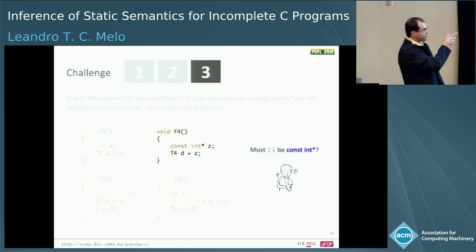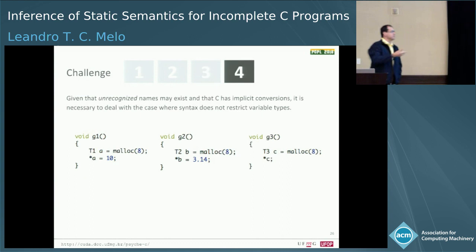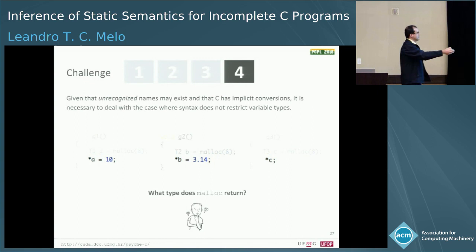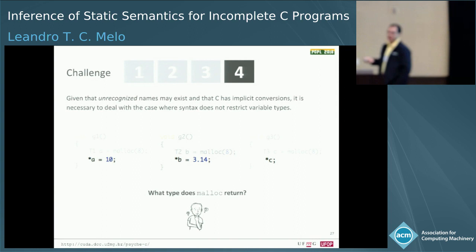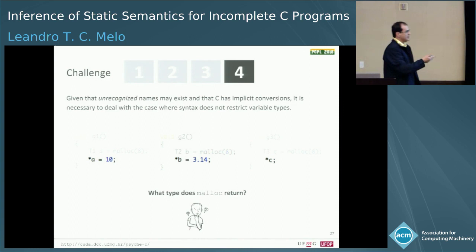Those are a few of the challenges that appear — not necessarily all of them; we describe others in the paper. We also have malloc, malloc, malloc — what exactly does malloc return? Is it a pointer to an int, a pointer to a double, or whatever? We don't know. Malloc returns a void pointer, and in C — as opposed to C++ — a void pointer implicitly casts to any other pointer type. So we need to identify that those are pointers to a specific type.